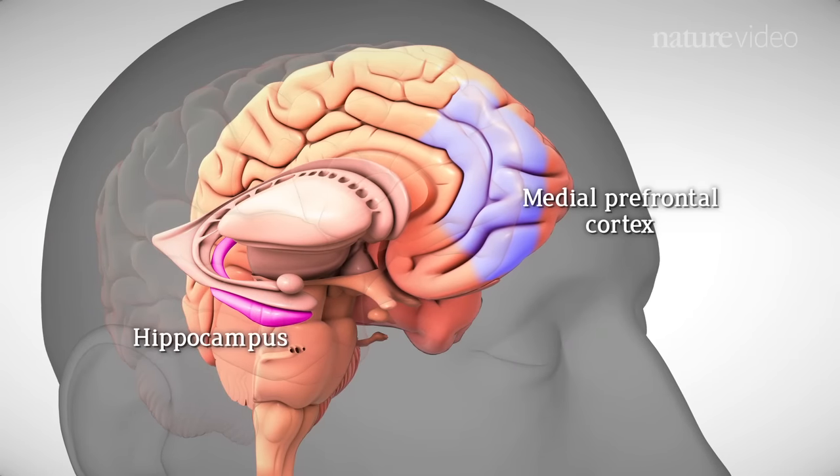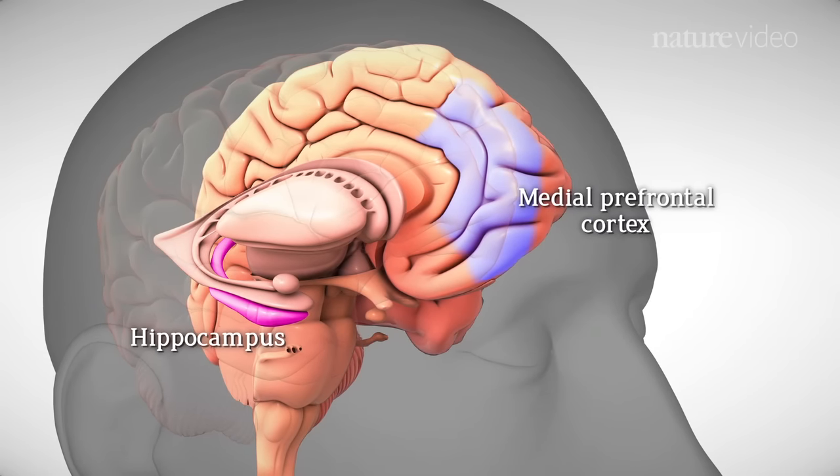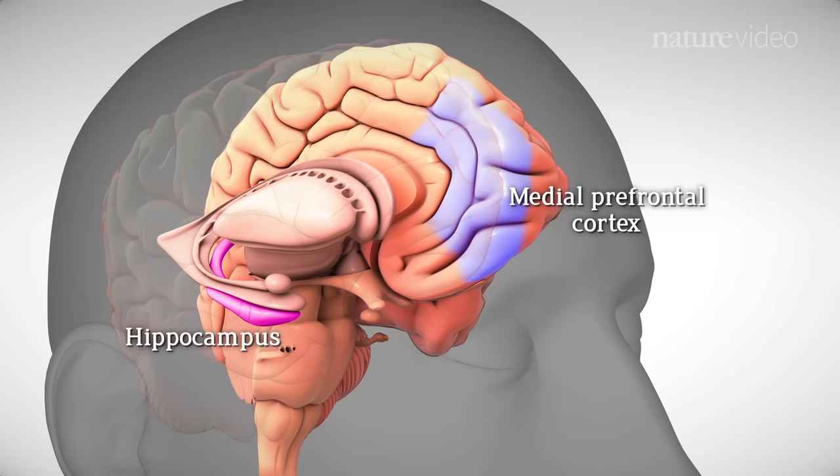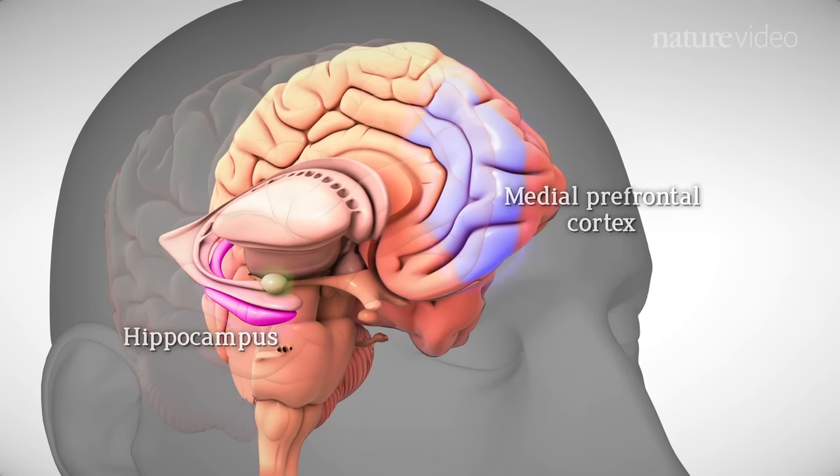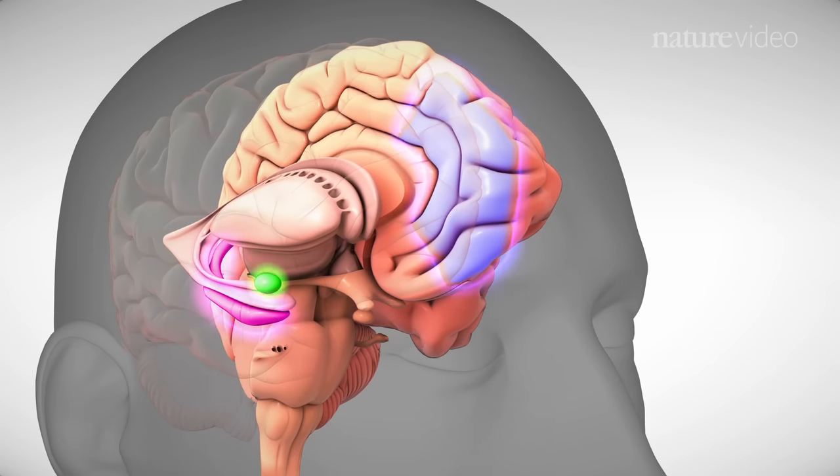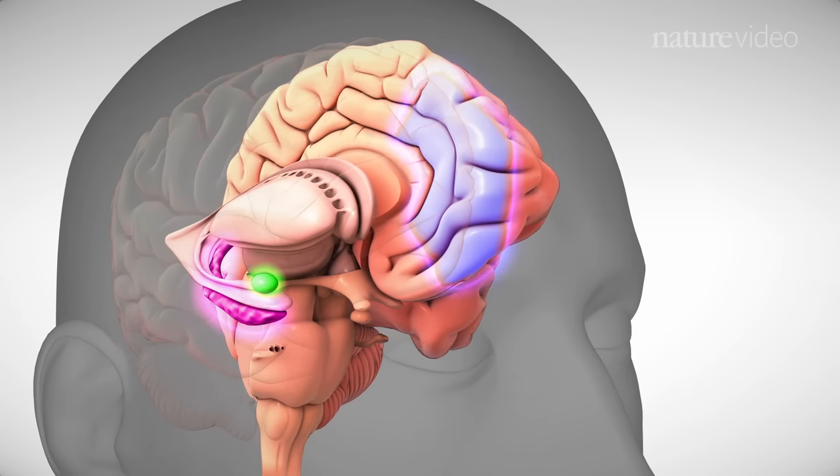The hippocampus is involved in memory formation and along with the prefrontal cortex is particularly vulnerable to the effects of stress. Depressed people are more susceptible to stress, which can cause physical changes in the brain, including atrophy of the hippocampus.